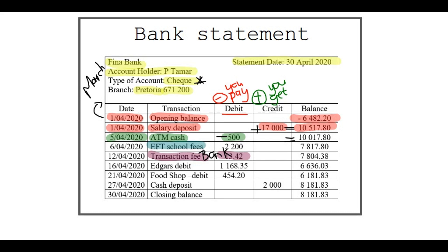This person also paid with his debit card 1,100, so he has even less in his bank. He also bought food at the food shop for 454 Rand.